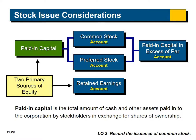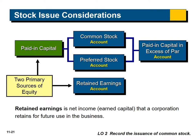When a company issues stock, there are two primary sources of equity: paid-in capital and retained earnings. Paid-in capital is the total amount of cash and other assets paid into the corporation by stockholders in exchange for shares of ownership — it's what investors have invested into the company. Retained earnings, on the other hand, is the net income that a corporation retains for use in the business rather than paying out as dividends. A company earns net income and can either keep it — retained earnings — or pay it out as dividends.